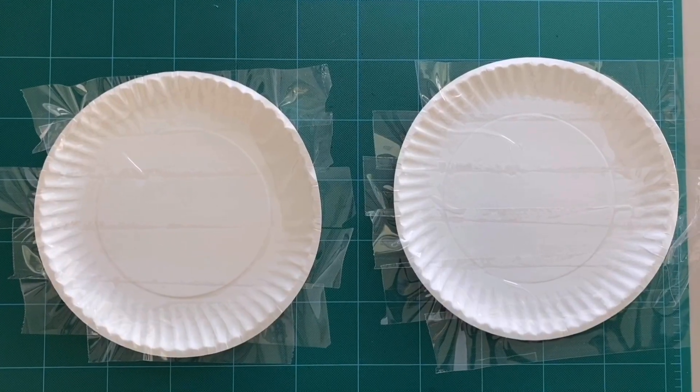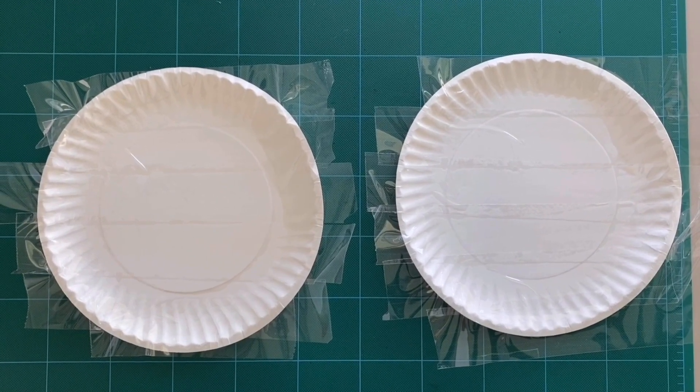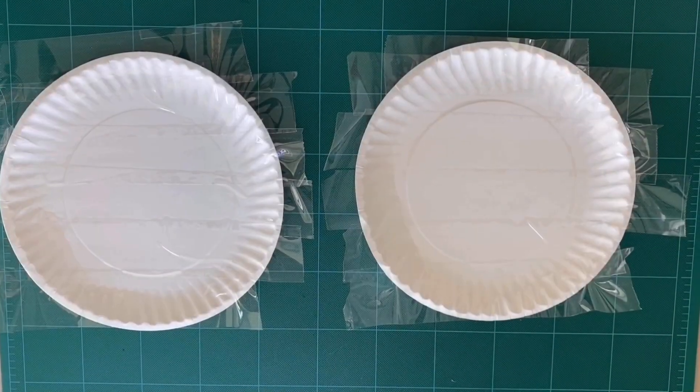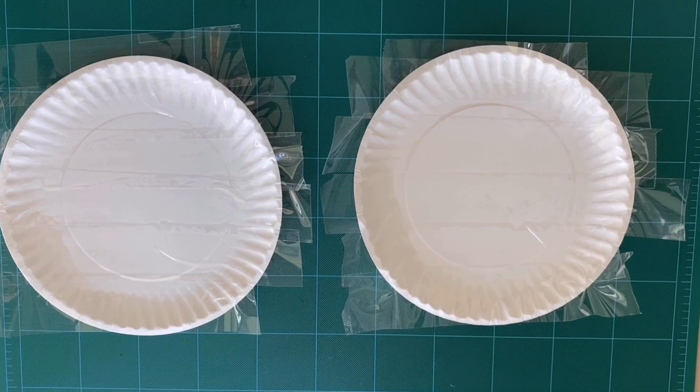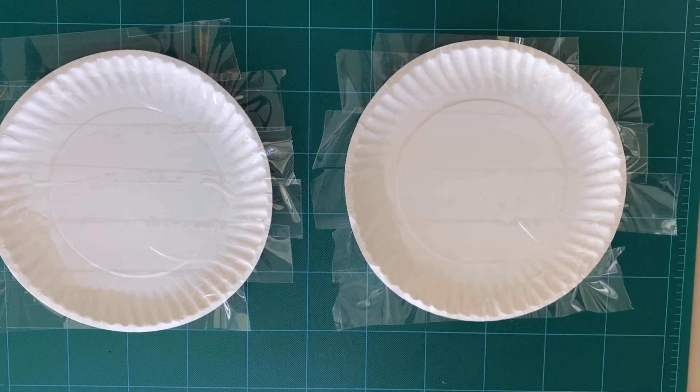This is what your plate should look like when you've taped them both. Next you're going to use your scissors to cut the extra parts of the tape off.